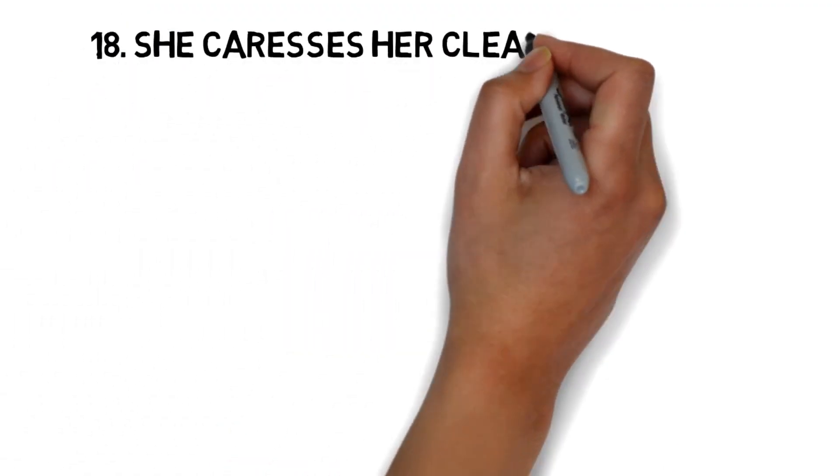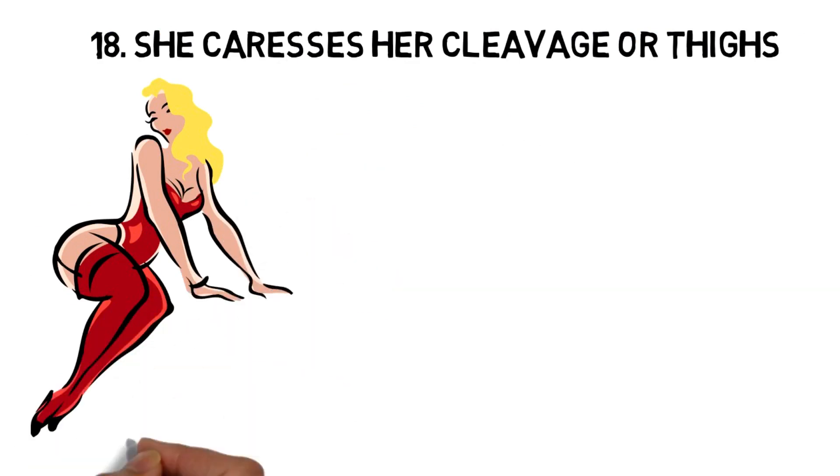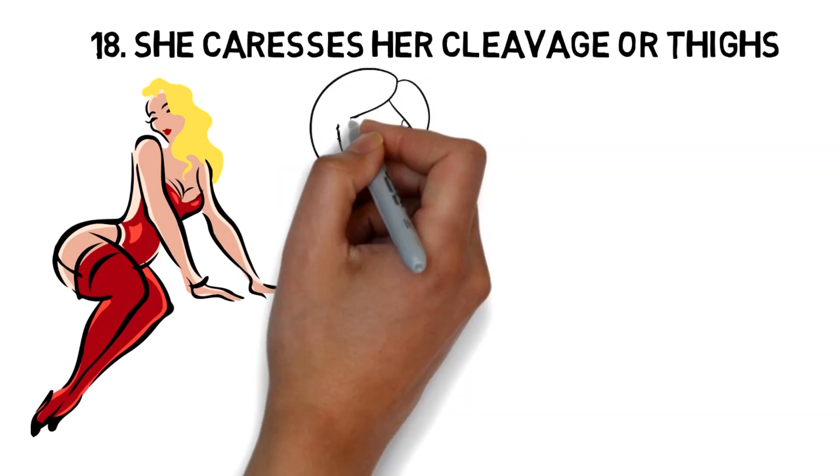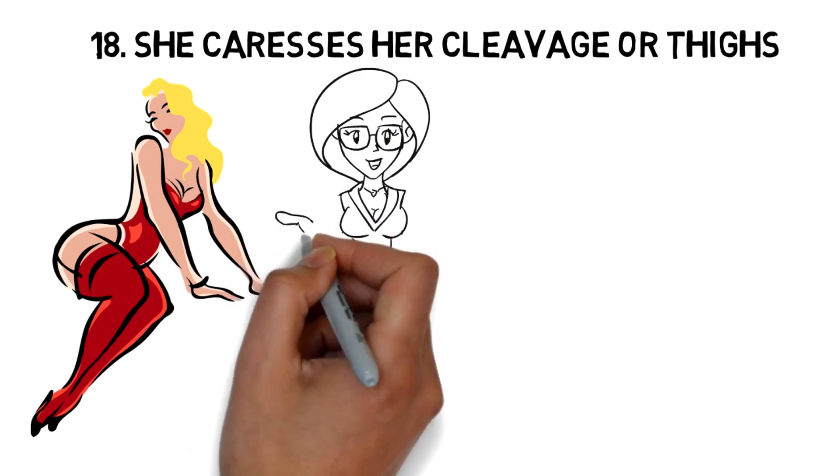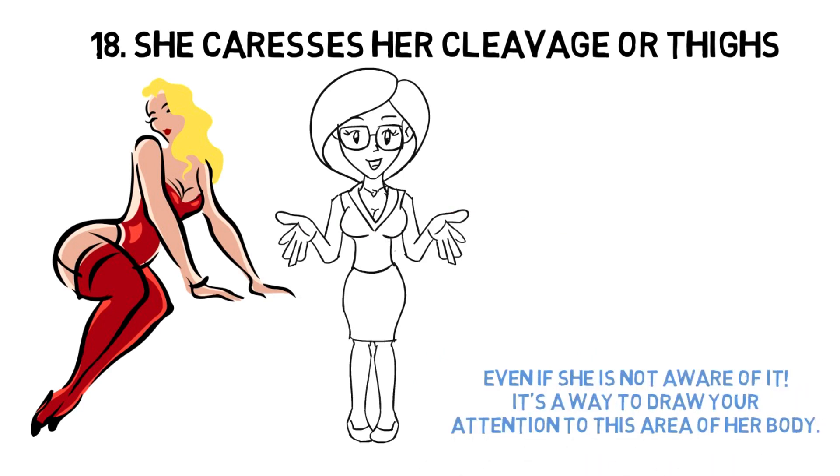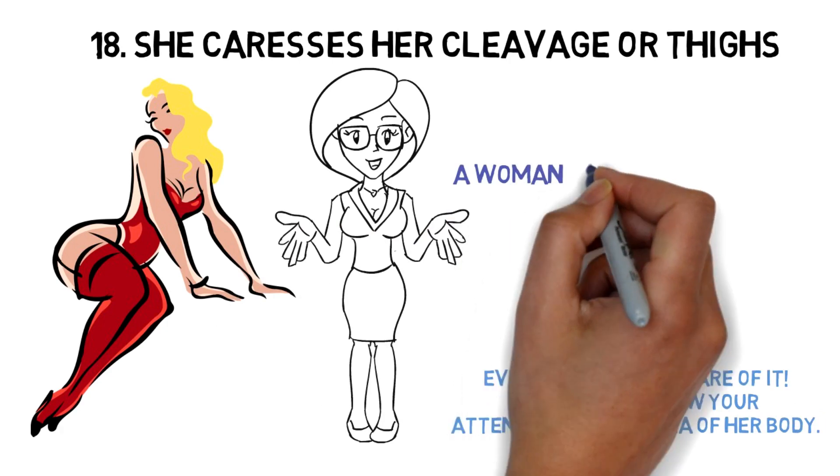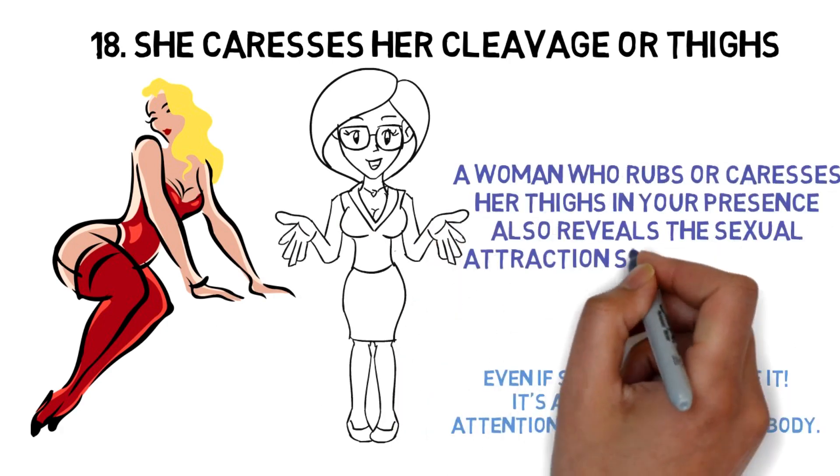18. She caresses her cleavage or thighs. This is an undisputable sign in synergology that indicates if a woman likes you. The chest and cleavage area, considered as the headquarters of femininity, are an erogenous zone, just like the thighs. A woman who unconsciously caresses her cleavage when she talks to you, just like a woman who plays with her necklace, is actually trying to seduce you, even if she is not aware of it. It's a way to draw your attention to this area of her body. A woman who rubs or caresses her thighs in your presence also reveals the sexual attraction she feels for you. It's up to you to be observant.